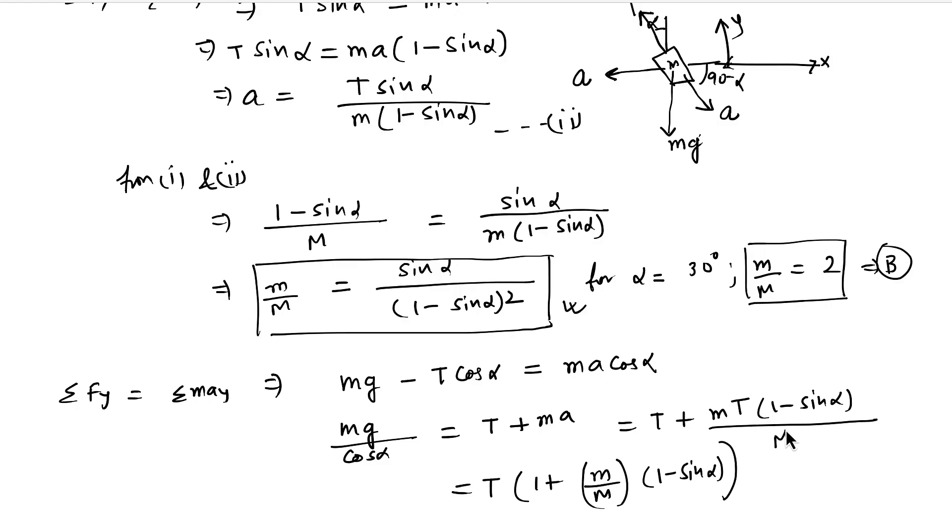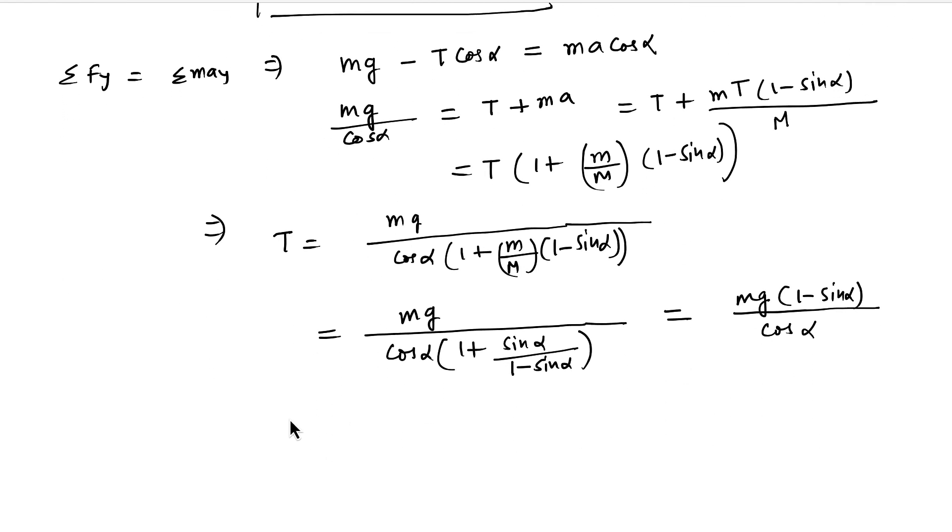So T will be mg(1 minus sin alpha) by cos alpha. So if you see, this one is also constant because alpha is constant.